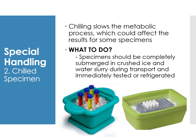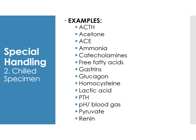For chilled specimens, chilling slows the metabolic process which could affect results for some specimens. Specimens should be completely submerged in crushed ice and water slurry during transport and immediately tested or refrigerated. Examples of tests requiring chilled specimens include ACTH, acetone, ACE, ammonia, catecholamines, fatty acids, gastrins, glucagon, homocysteine, lactic acids, PTH, pH or blood gas, pyruvate, and renin.